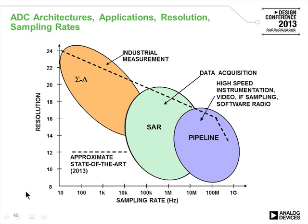Sigma-delta converters are well suited for high-resolution industrial applications. There is a crossover point between sigma-delta and 16-to-18-bit SAR converters, which also have some applications here. Pipeline converters are limited primarily to high-speed video and IF sampling. For most precision weigh scale applications, a sigma-delta or SAR converter would typically be chosen.